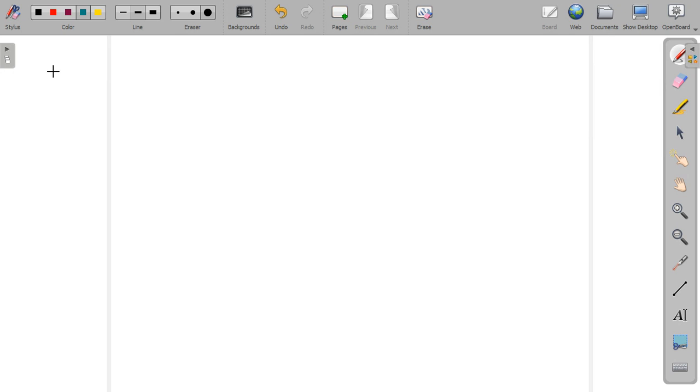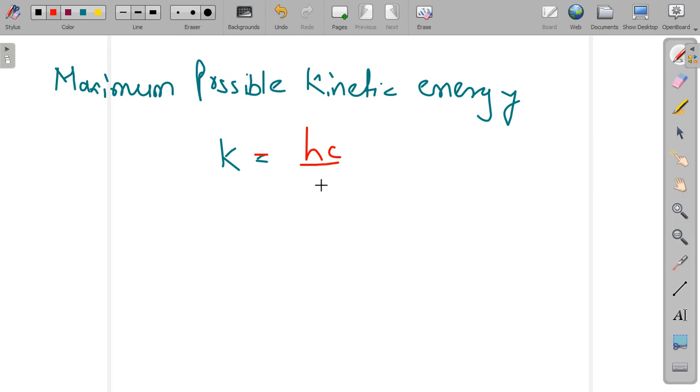So first of all, we calculate the value of maximum possible kinetic energy, which is given as k equals hc divided by lambda minus phi.